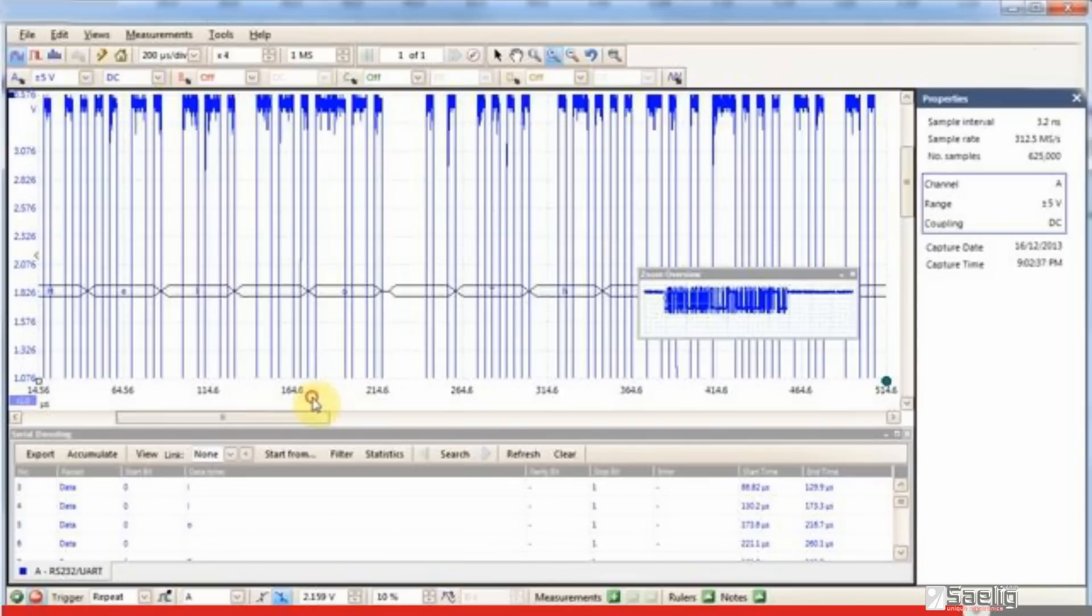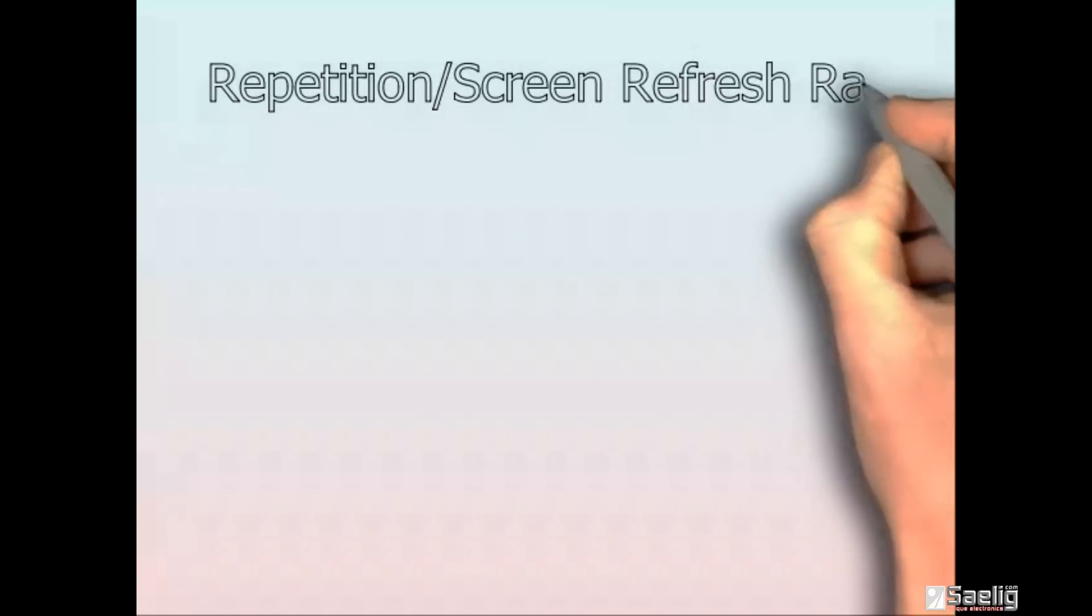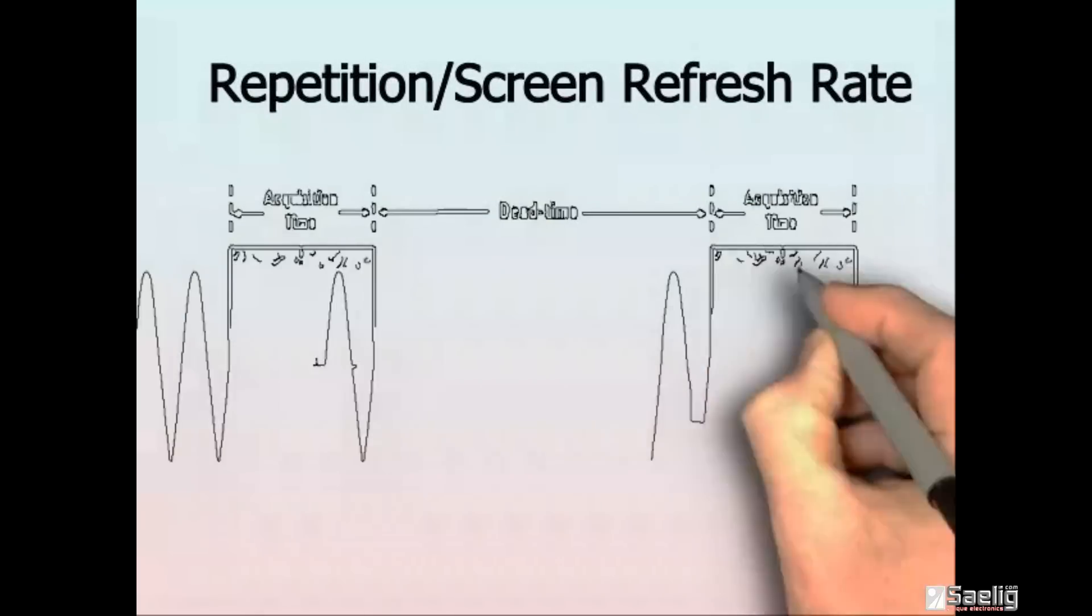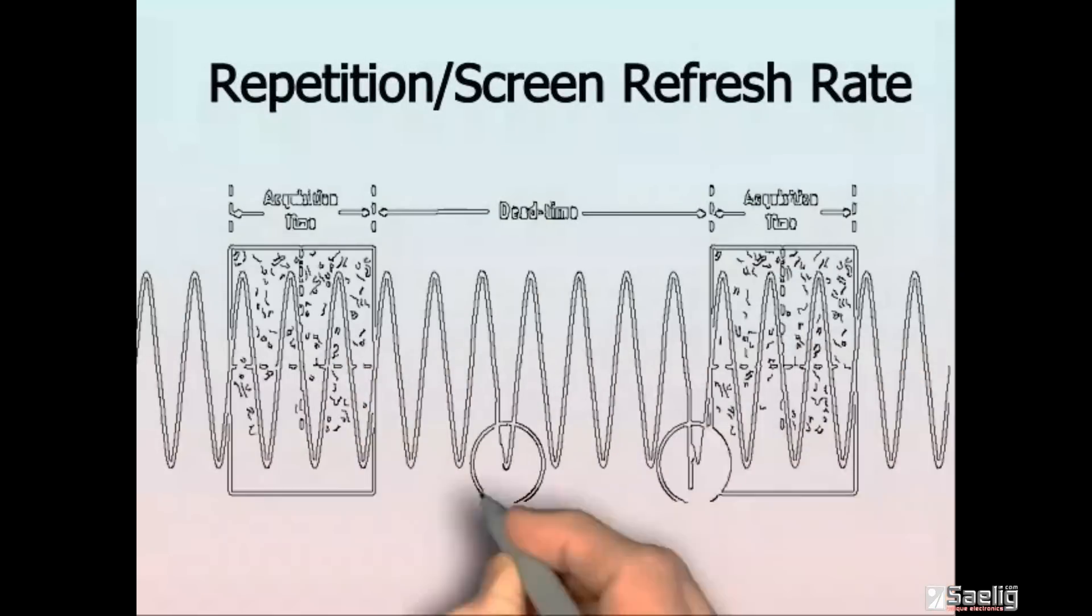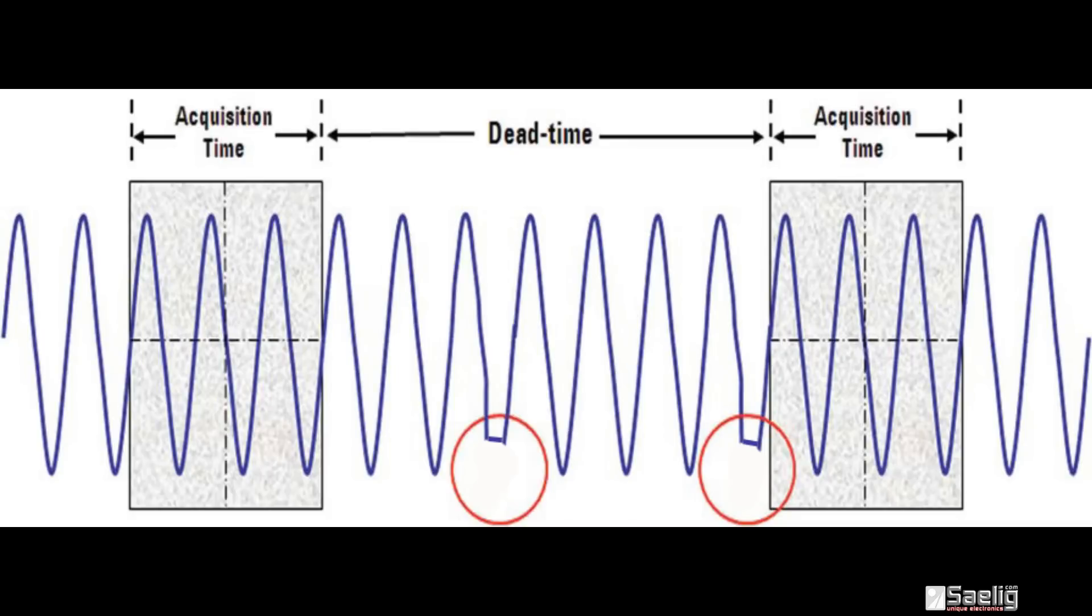A spec that's confusing to some is the repetition or screen refresh rate. This is the time between the display of the signal after it's been digitally processed and the next signal capture. This blind interval can leave spaces where you may not see important or intermittent signals. The screen refresh rate needs to be as high as possible, so it's worth comparing this spec between scopes.